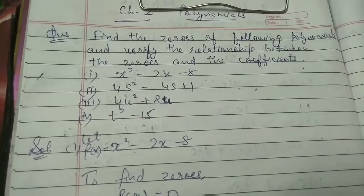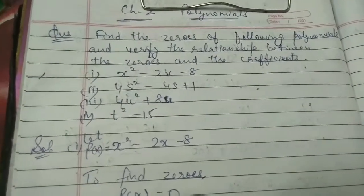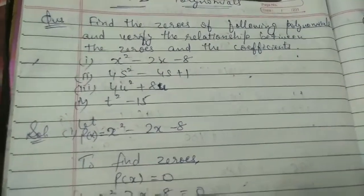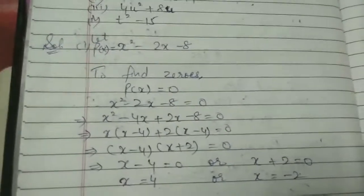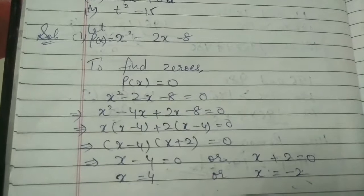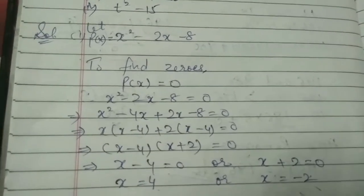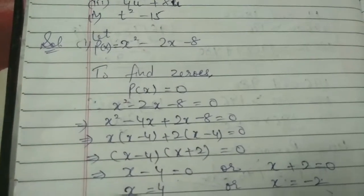We have to find zeroes. The first question: let P(x) be the polynomial x² - 2x - 8. This is the given equation. To find zeros, we set P(x) equal to zero.